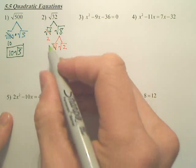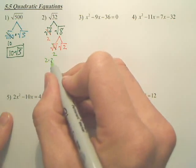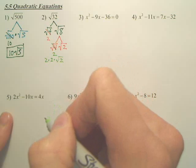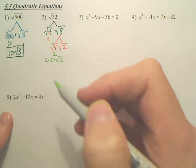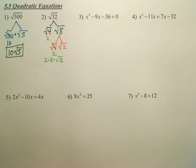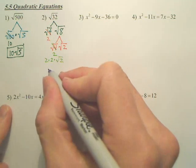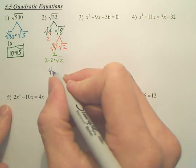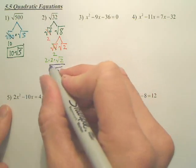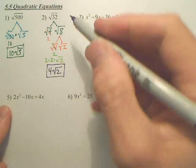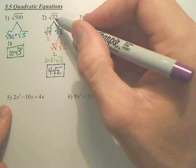So, don't we now have 2 times 2 times square root 2? We have a 2, a 2, and a square root of 2. What's 2 times 2? Isn't that 4? 4 square root 2. That is a simplified form of square root 32.